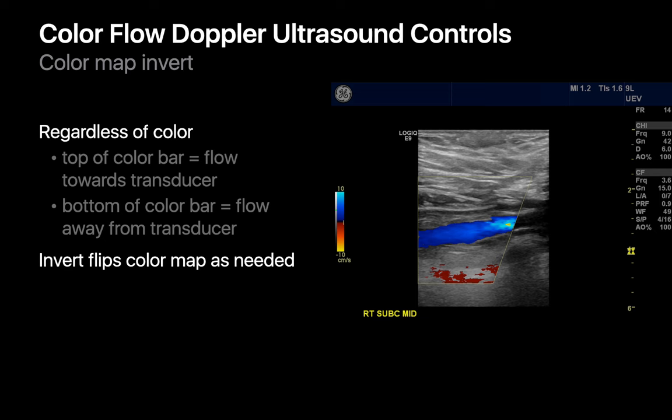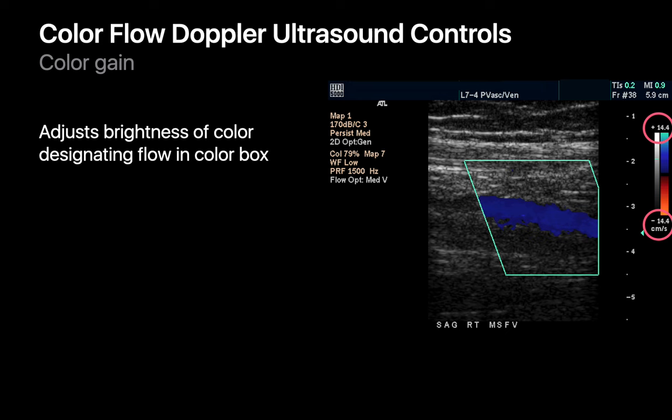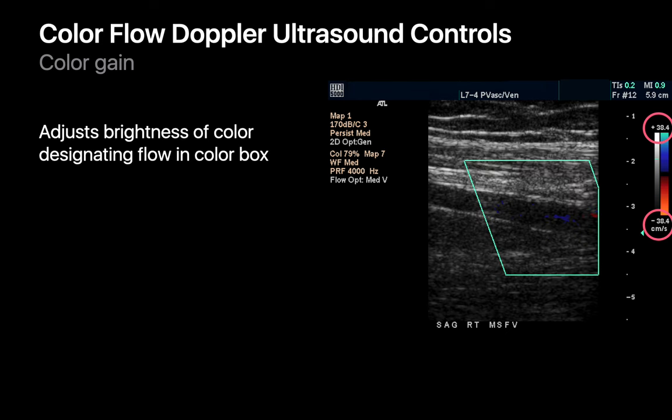Color map invert is a straightforward setting that lets you assign the color blue to flow towards versus away from the transducer. Color gain allows you to adjust the brightness of the color you see when there's flow in the color box — essentially determining what flow velocity range you want to assign your entire color spectrum to. If color gain is set too low, flow within a vein may become barely perceptible even if flow is present.